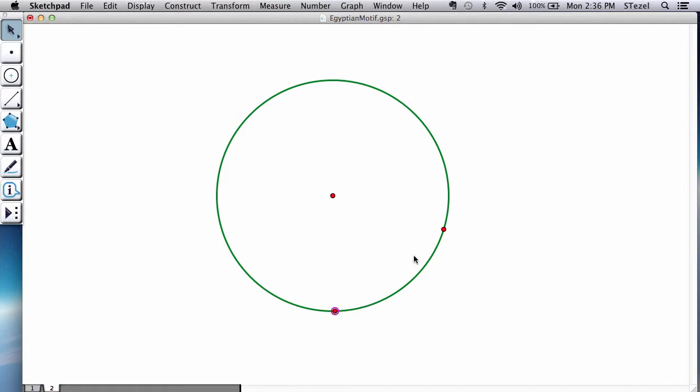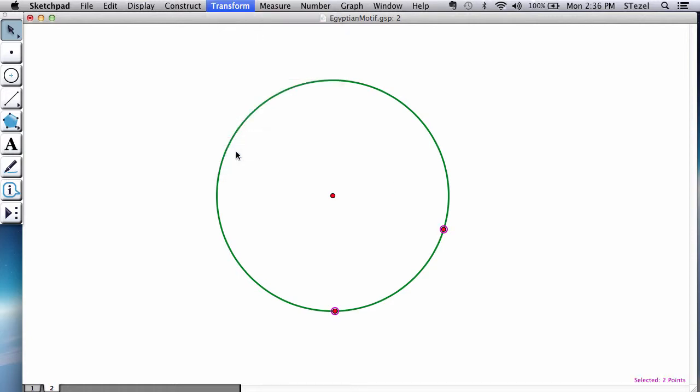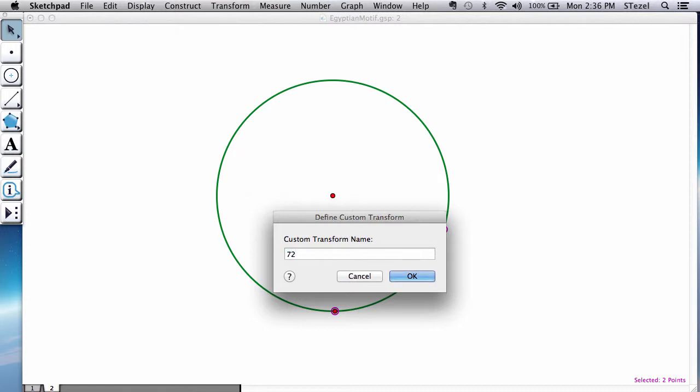You select the original point, the final point, and define your own custom transformation. I'm going to call this 72 degree rotation. That way, I can use this again and again.